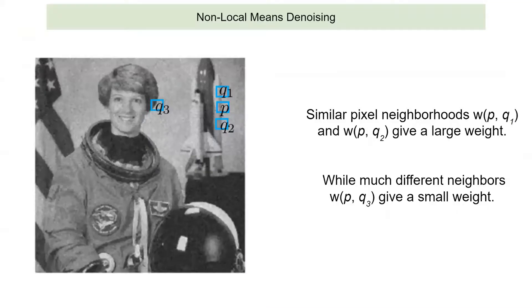In non-local means, what we want to do is that given a noisy image and selecting a particular patch P for denoising, you want to represent P as a weighted combination of Q1, Q2, and Q3. You want to estimate the value of P based on these values. The idea is that Q1 and Q2 are going to have a higher influence on P, and Q3, being farther away and having a more different intensity value, would have a smaller influence.